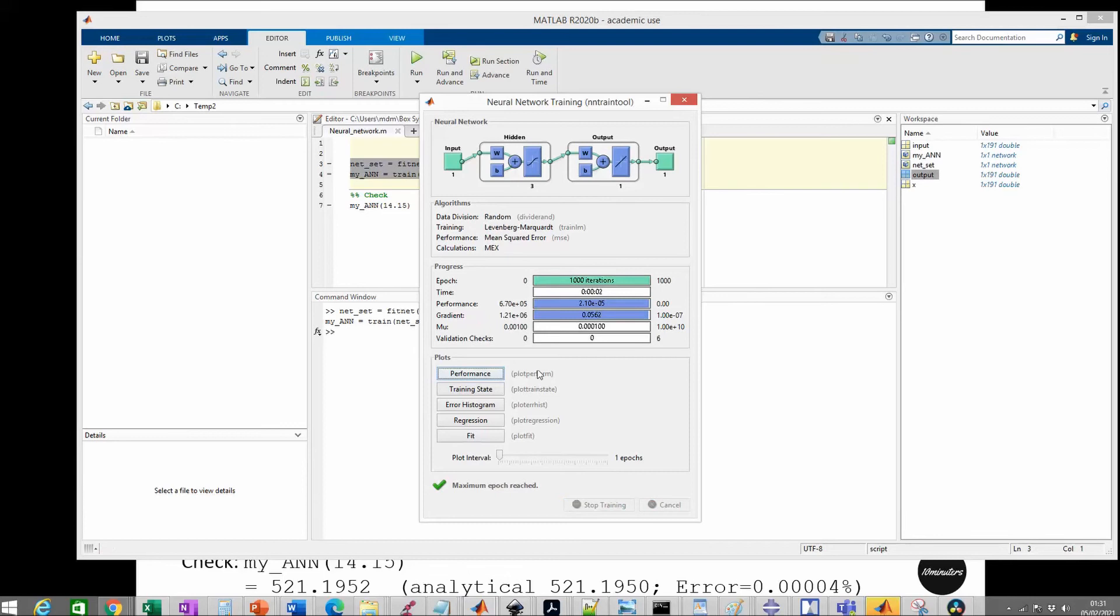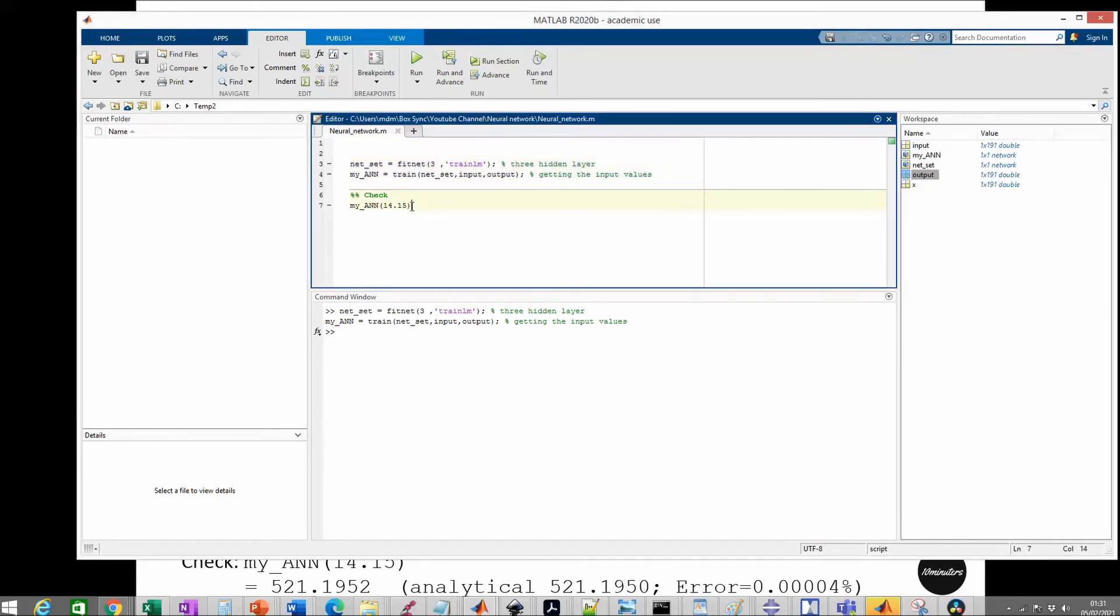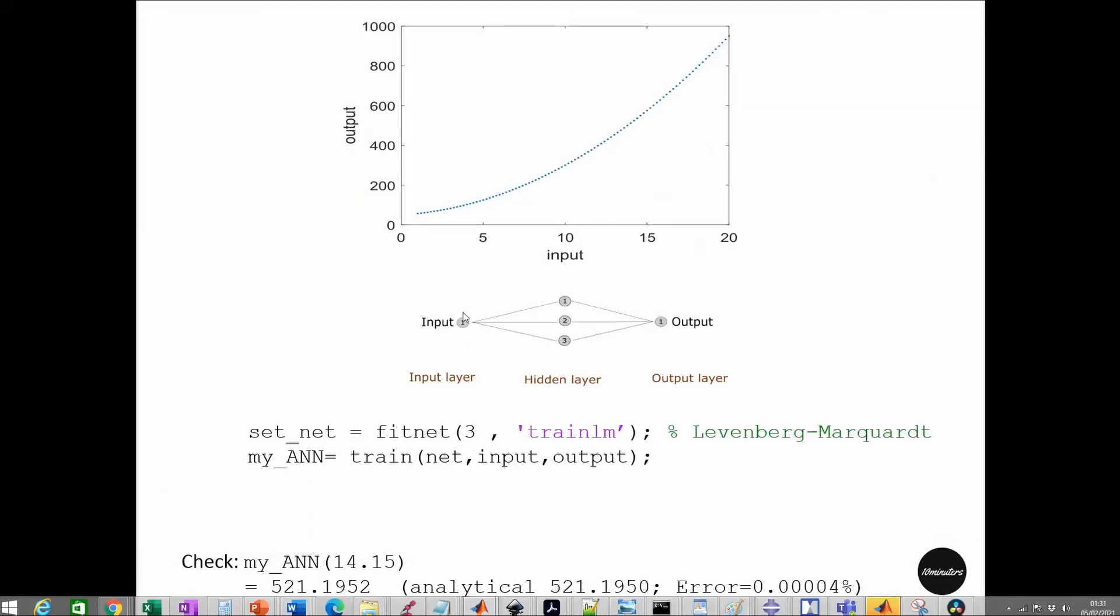The training shows the number of iterations and other plots that display accuracy. Now we have this my_ANN function. This function is like any other function, where the input layer takes the x coordinates of this curve and the output layer provides the y coordinates.